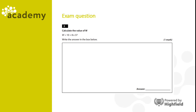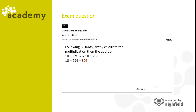Now let's look at an exam-style question. Calculate the value of W, where W equals ten plus eight times thirty-seven. Pause the video, have a go, then press play to see the answer. Following BIDMAS, first calculate the multiplication: eight times thirty-seven is two hundred and ninety-six. Then add ten to get three hundred and six.